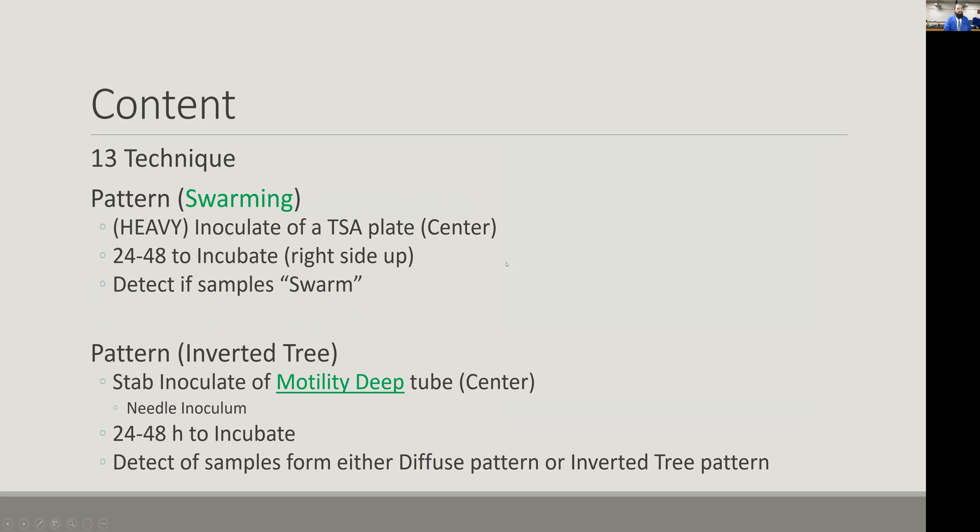For lab 13, we practice two separate techniques, detecting two different types of materials to observe motility. This one is more passive—we inoculate the system and give it a couple of days before observing. The first technique is called swarming. We use a standard TSA plate with a heavy inoculum. Rather than doing a loop with a tiny pickup, we use a cotton swab, dip it heavily into the organism, and place a glop right in the center of the plate.